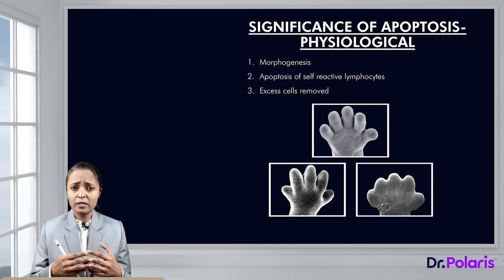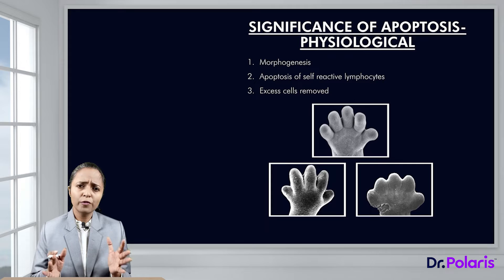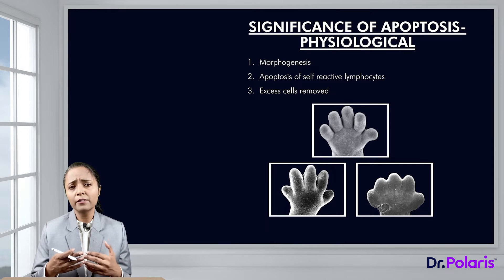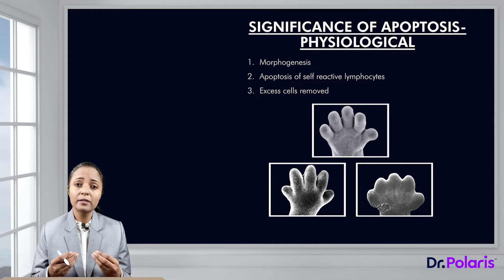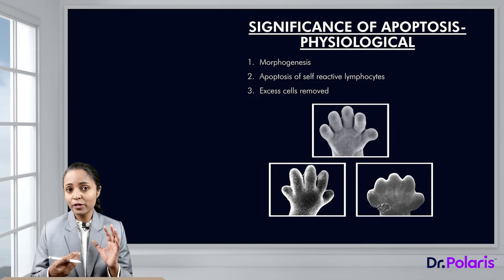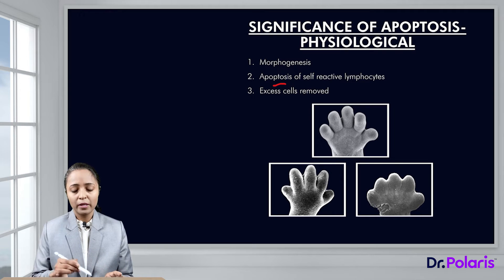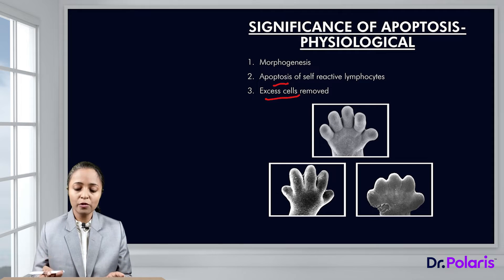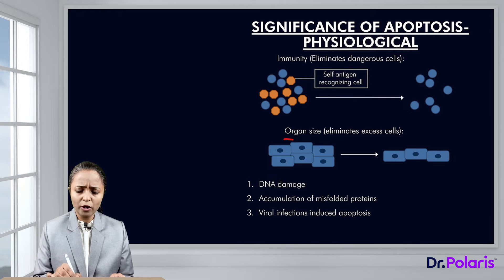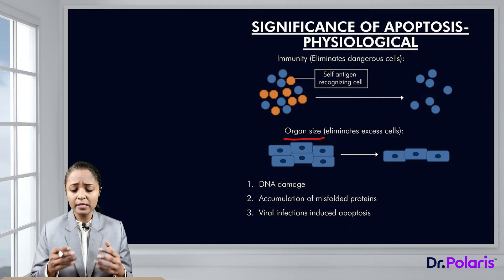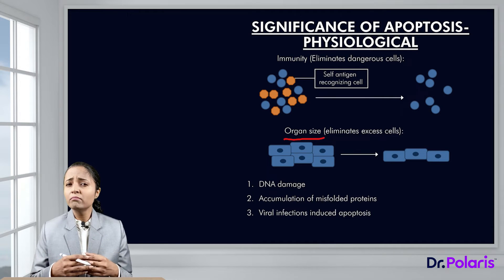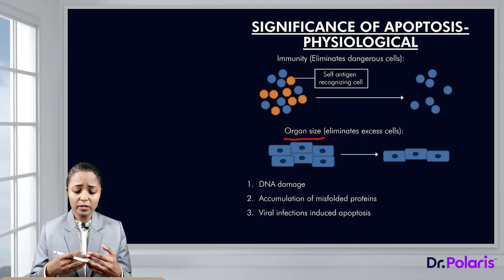Lymphocytes that develop include many cohorts active against various antigens, and some are also active against our own antigens. Those self-reactive lymphocytes are recognized and die by means of apoptosis. Additionally, organ size is maintained in a constant manner because excess cells are continuously dying. Similarly, in intestinal epithelial cells there is constant turnover — cells are dying by apoptosis. This is the physiological significance of apoptosis.